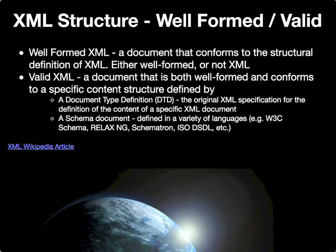When we talk about XML, one of the areas where we have to start is a discussion about the structure of XML and the distinction between well-formed and valid XML. Well-formed XML is a document that conforms to the structural definition of XML as a core standard. If a document is not well-formed — meaning it does not conform to the XML standard — it is not XML. An additional step for many XML documents is validation: once it is determined that an XML document is well-formed, you can then determine whether it is valid when compared against a content structure.